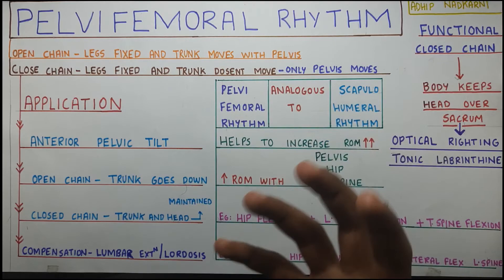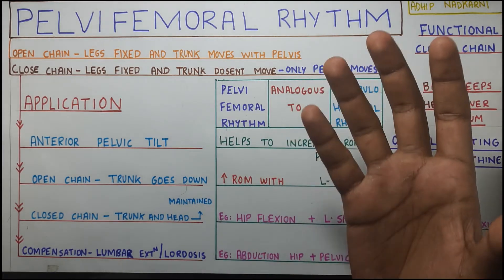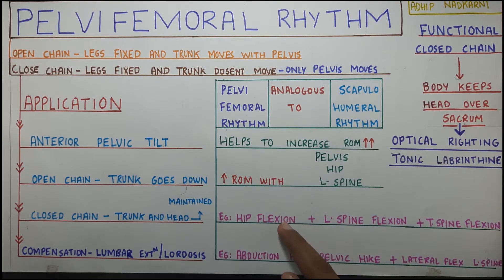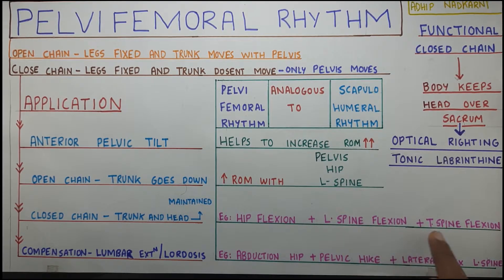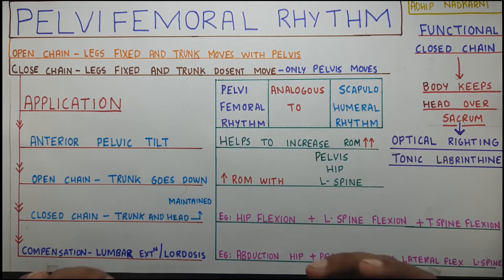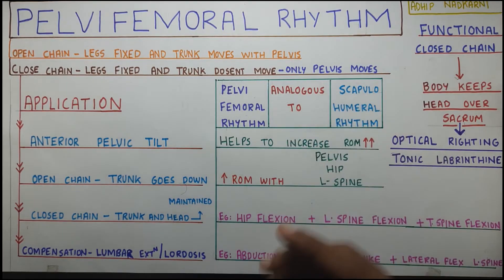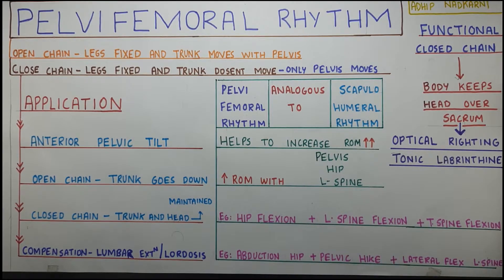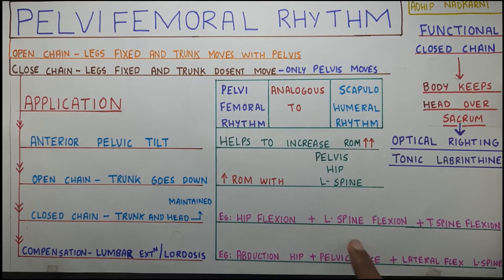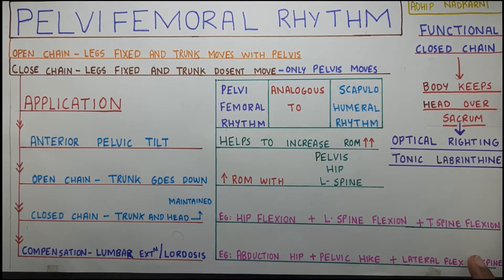Here are two examples of Pelvi-Femoral Rhythm. First: when you are doing hip flexion, there is also lumbar spine flexion and thoracic spine flexion happening along with it, plus anterior pelvic tilt - this is how the range of motion increases. Second example is abduction of the hip: when you are doing hip abduction, there will also be pelvic hike which increases the range of motion, and lateral flexion of the lumbar spine, which further increases the abduction range.